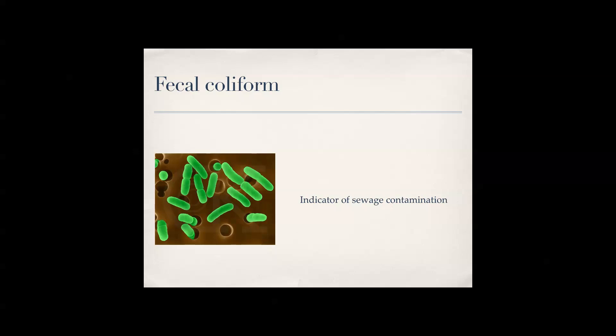Fecal coliform is an indicator of sewage contamination. So if you were a scientist inspecting a river to see if it has sewage contamination, and you see fecal coliform, you know that it does and you need to get it cleaned up.